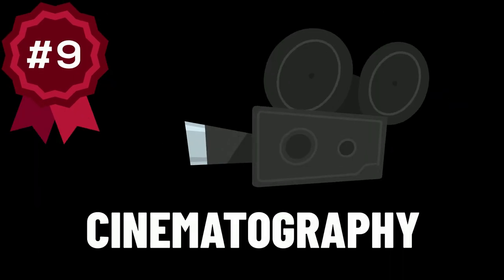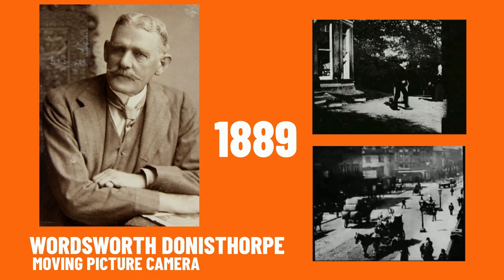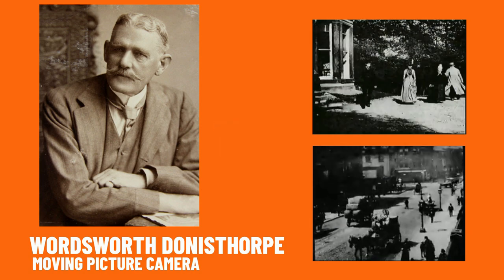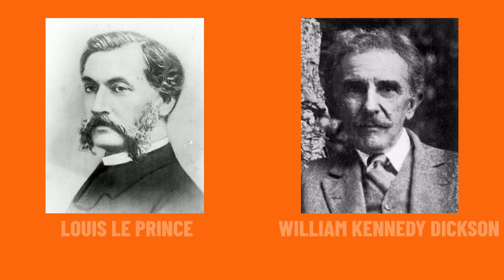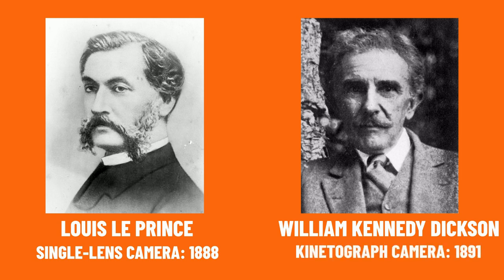Let's move on to our next Victorian invention: cinematography. In 1889 Wordsworth Donisthorpe developed and patented a moving picture camera which used moving film. Two other men are credited with the birth of cinematography: Louis Le Prince and William Kennedy Dickson. Le Prince invented the single lens camera in 1888, and Kennedy Dickson invented the Kinetograph camera in 1891.